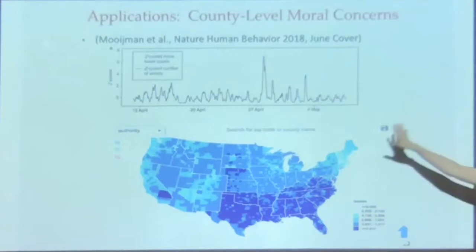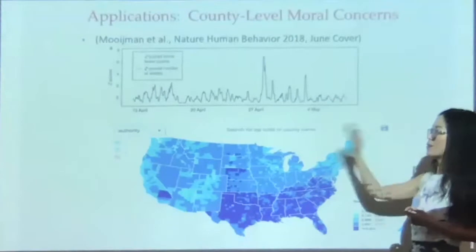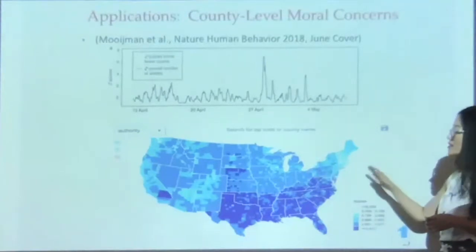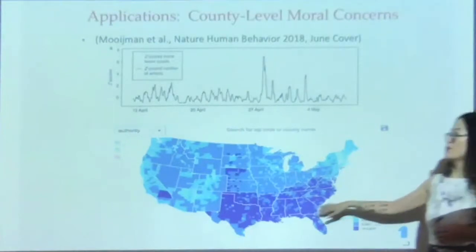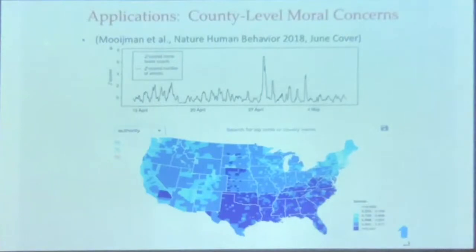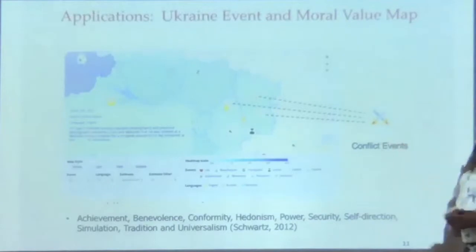We published a major paper on this last year. We further extended that to the country level for the United States. You can see we show how much people care about authority in the US at the country level — California and New York don't care about authority, but people in the South care a lot about authority. This is a very sensitive map and we had to take it down, and we were forced to do this for Ukraine instead.